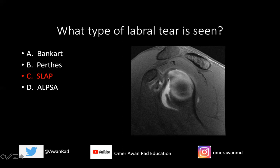Notice anterosuperiorly there's a defect in the labrum — this is a normal variant known as a sublabral foramen, usually at the one o'clock to three o'clock position. Using a clock face with 12 o'clock at the top, this defect is between one and three o'clock, representing congenital non-attachment of the labrum. It can also be partially unattached, called a perilabral recess. The key finding here is bright contrast signal within the substance of the superior labrum running anterior to posterior at the 11 o'clock to one o'clock position, making this a SLAP tear.